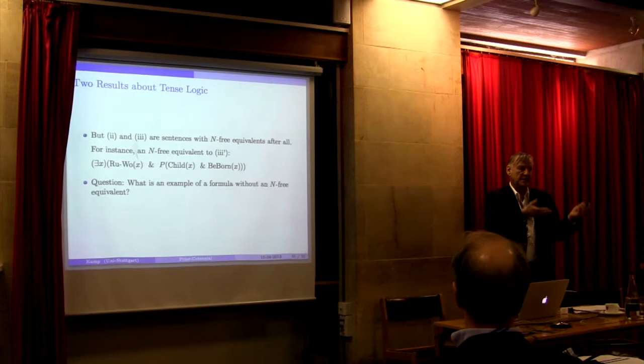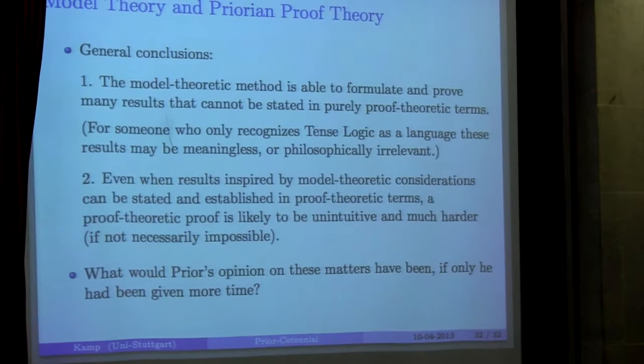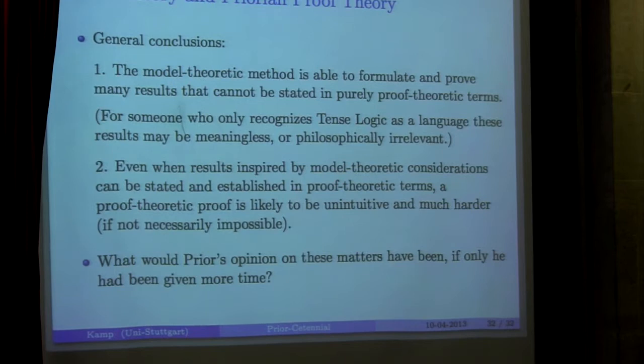So the other result that I wanted to mention has also been mentioned a number of times already. This is a treatment of 'now' as a one-place sentence operator, syntactically on a par with P and F, with this double indexing semantics according to which a formula of the form 'N phi' evaluated at a time T, while part of an utterance made at another time T prime, is true if and only if phi itself is true at that utterance time T prime—you have to remember the second index in this way of doing the model theoretic semantics.